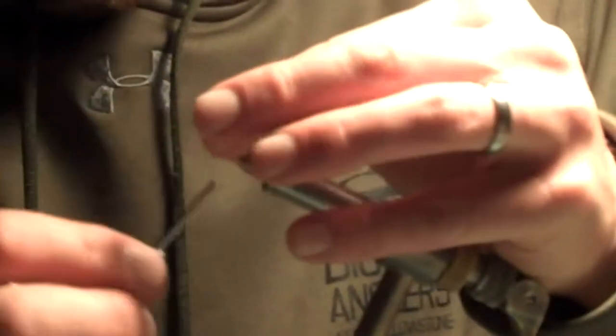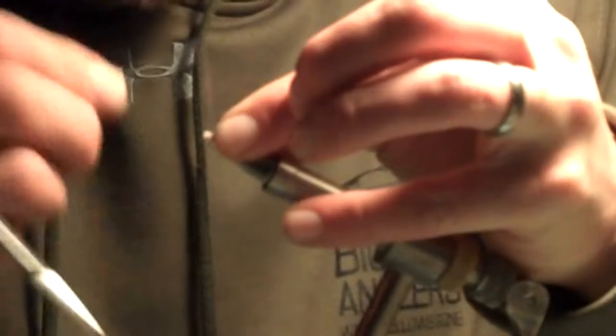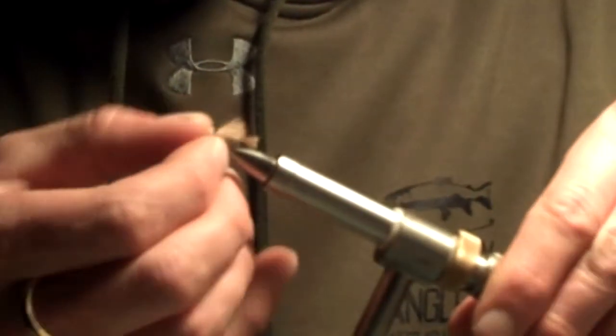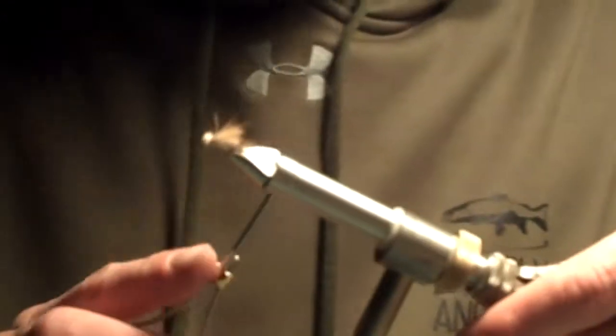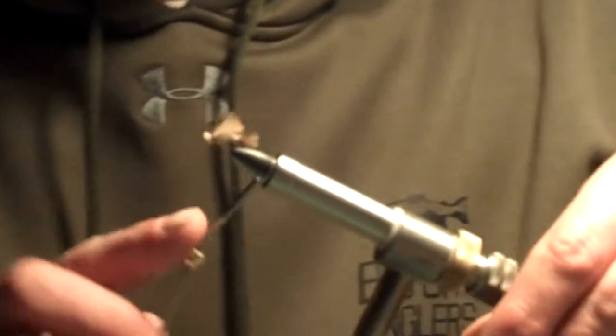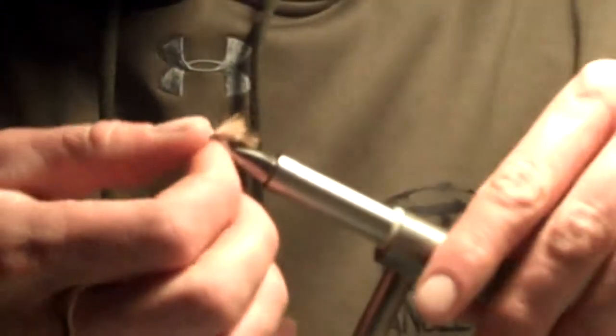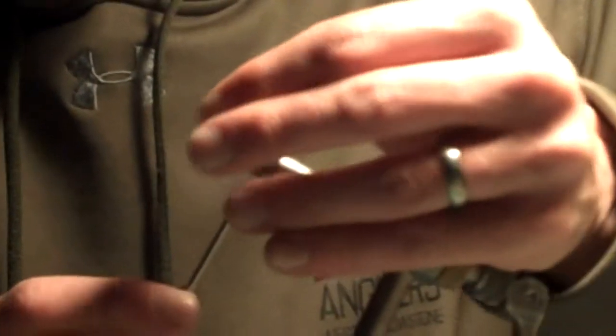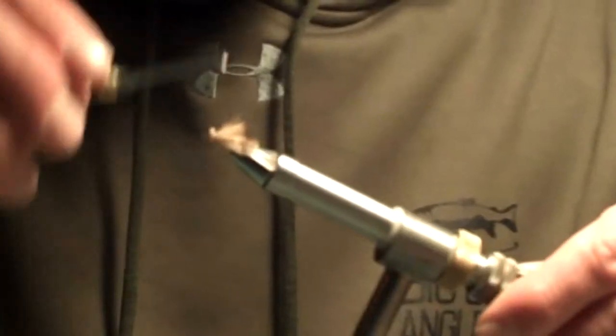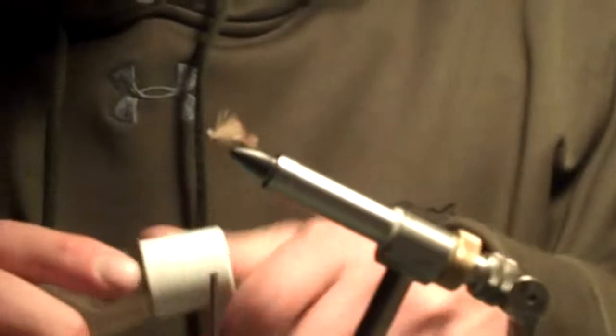I trim the wing before I tie the fly. I find that it's easier, just pinch it and trim it. You'll get used to the length. That's about it right there as it just extends barely past the bend of the hook and onto the trailing shuck. Kind of flare that out a little bit, and make a few wraps in front. Put a little head cement in there.